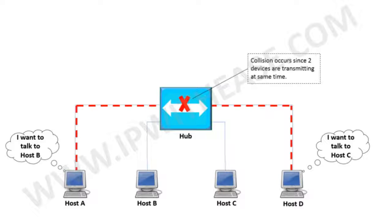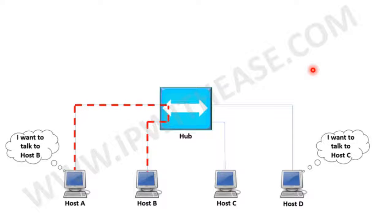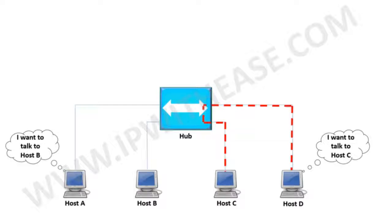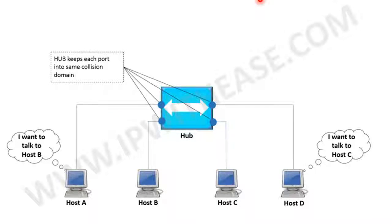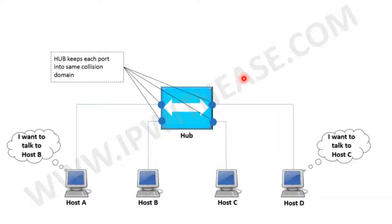The only way ahead is that both host A and D transmit at separate times. Host A sends traffic first and completes the communication. Then host D sends traffic towards host C without collision, since there is no other transmitter at that time. To summarize, a hub keeps each port in the same collision domain, meaning two or more hosts transmitting at the same time will cause a collision.